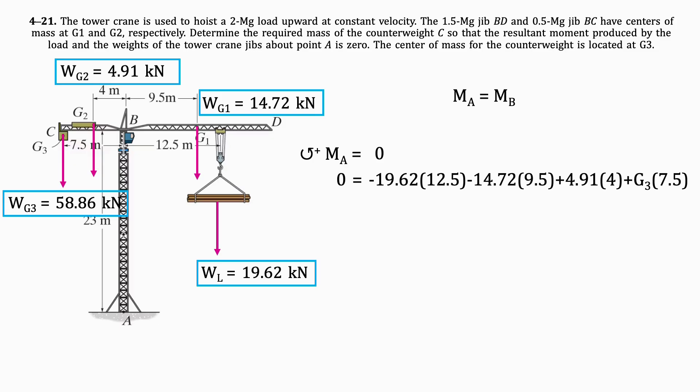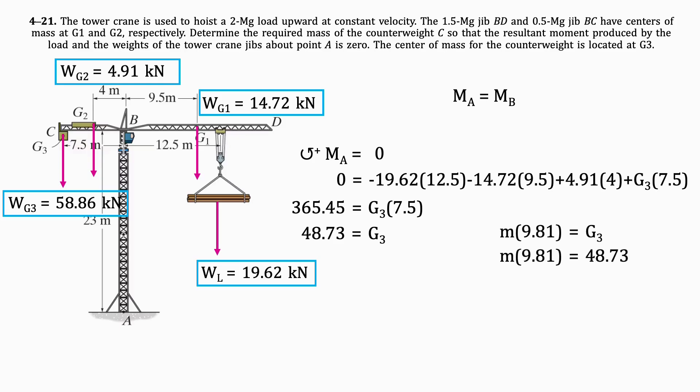We will set it equal to 0, as the desired moment is 0. By isolating for G3, we get that it equals 48.73. Now let's find the mass. We can set up an equation for force resembling F equals M times G. We get that 48.73 equals the mass times 9.81. By isolating for the mass, we get 4.97 megagrams.